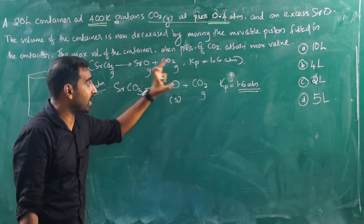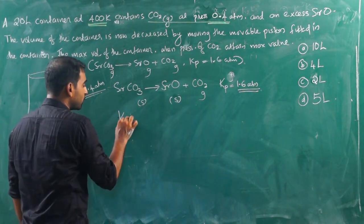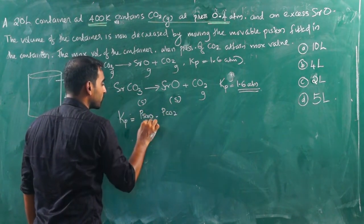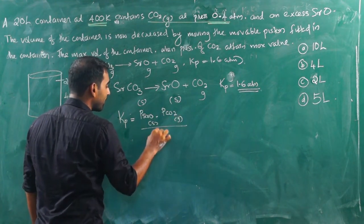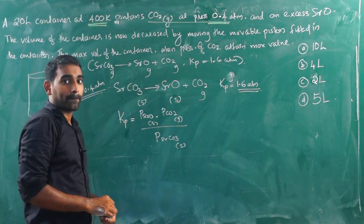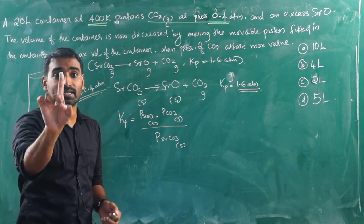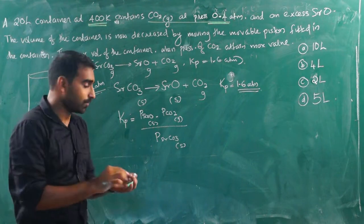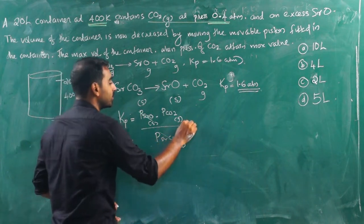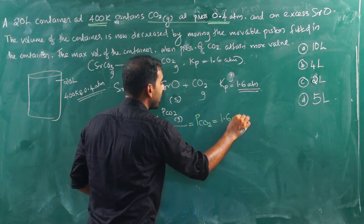Kp equals pressure of SrO times pressure of CO₂ divided by pressure of SrCO₃. In heterogeneous equilibrium, pure solids and pure liquids are taken as 1, so both solids cancel out. Therefore, Kp equals pressure of CO₂, which equals 1.6 ATM.